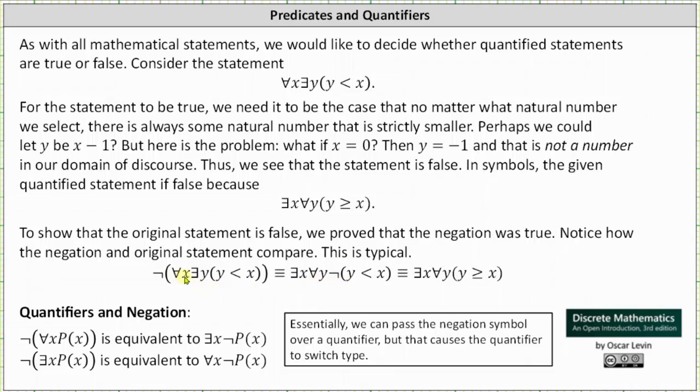Notice how the original statement has for every x and the negation has there exists x, and the original statement has there exists y and the negation has for every y. And then the negation of y less than x is y greater than or equal to x. And down below, we have some extra notes on quantifiers and negation. Again, the negation passes over the quantifier and the quantifier switches type.